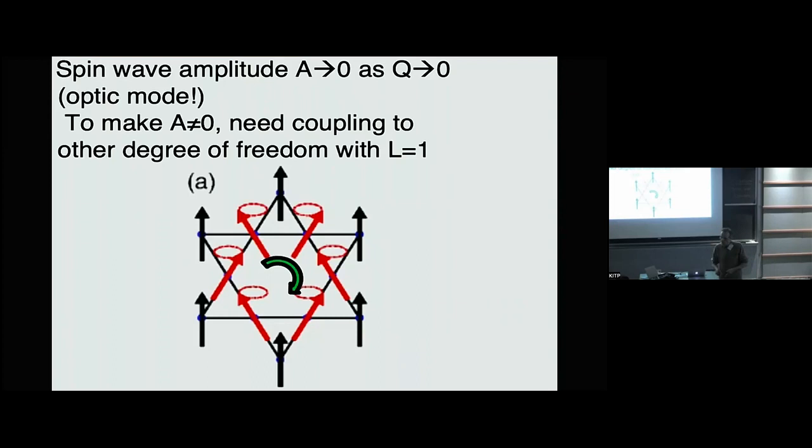The matrix element effects are a way to probe the ground state — to the extent you see an anomalous matrix element to the excited state, that tells you something about the ground state as well.